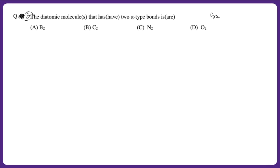The last question is practice question number three. It says: which diatomic molecules have two pi-type bonds? You have to look at which of these molecules have two pi bonds. Remember how to count pi bonds — that is where you might make a mistake. Let me know in the comments and I'll try to give you a hint. That's it for this video — I tried to give you a quick overview of MSQ type questions so you understand what types of questions can be asked and how to approach them.